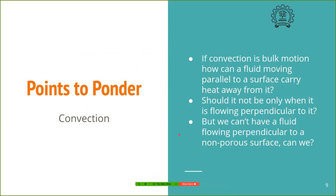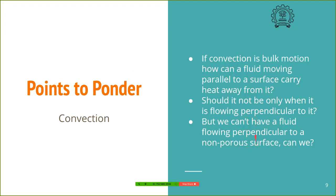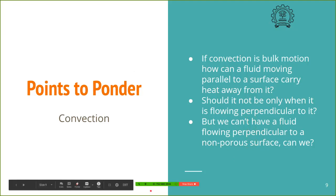There is something to think about: if convection is a bulk motion, how can a fluid moving parallel to a surface carry heat away from it? Should it not be only when heat flows perpendicular to the surface? We know that flow is in the horizontal direction, yet we say heat goes in the perpendicular direction — so what is the fallacy here? Try to think about it. We cannot have fluid going perpendicular because there is no vertical motion near a flat plate.